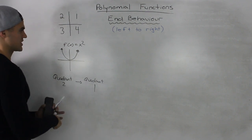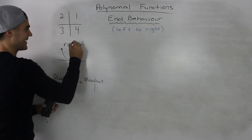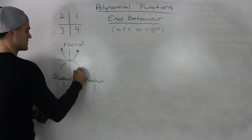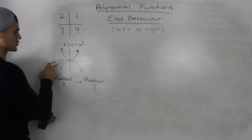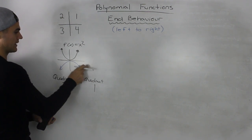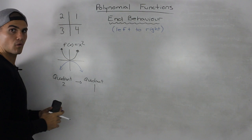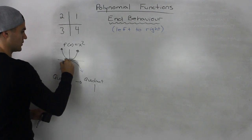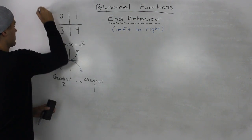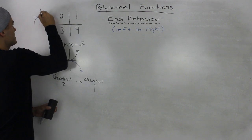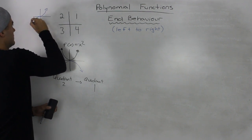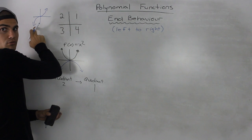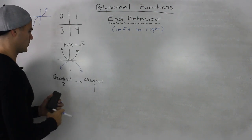For example, if we had negative x squared, it would look like this, and it would start in quadrant 3 and end in quadrant 4. Or, if we had x cubed, it would look something like this. Reading from left to right, it would start in quadrant 3 and then end in quadrant 1.